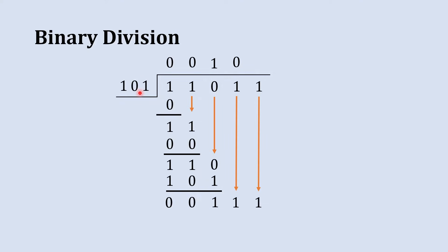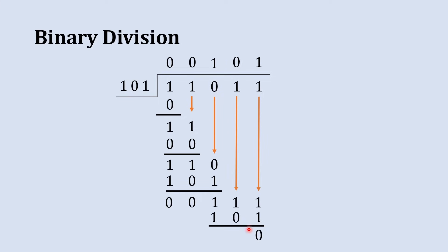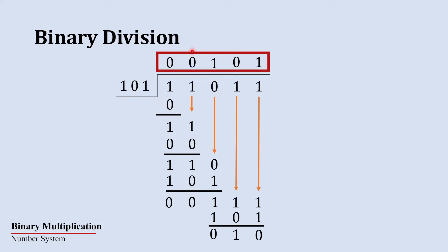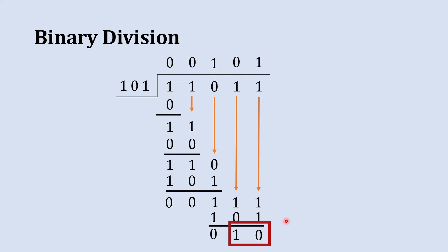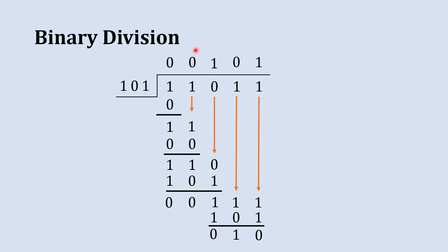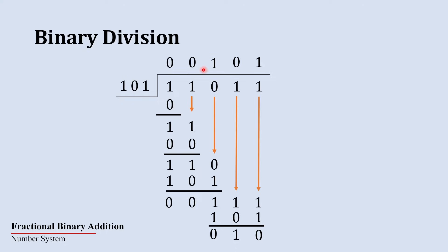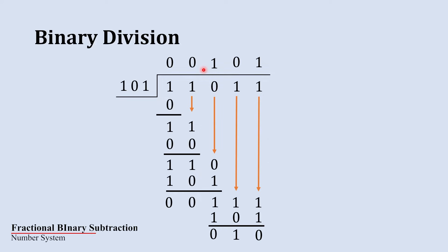Now 111 is greater than 101, so multiply by 1: one 101 is 101. Subtract: 1 minus 1 is 0, 0 minus 0 is 0, 1 minus 1 is 0, giving remainder 010. The quotient is 00101 and remainder is 010. We can ignore the leading zeros, so the quotient is 101 and the remainder is 10.